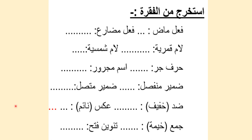This is another example: 'Istakhrij minal fiqra' — take out from the paragraph — 'fi'l mādi' past tense, 'fi'l mudāri'' present tense, 'lām qamariyya' moon letter word, 'lām shamsiyya' sun letter word, 'harful jarr' preposition, 'ismul majrūr' the word after the preposition, 'damīrul munfasil' detached pronoun, 'damīrul muttasil' attached pronoun, 'didd' meaning opposite, and 'jam'' meaning plural.